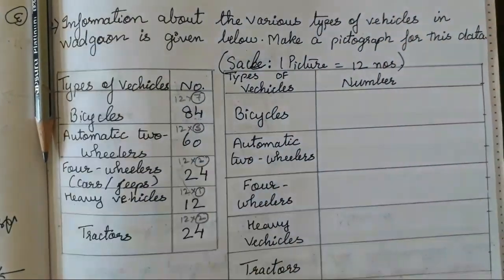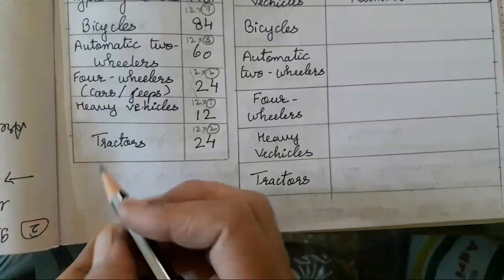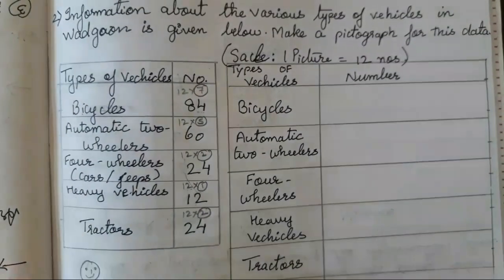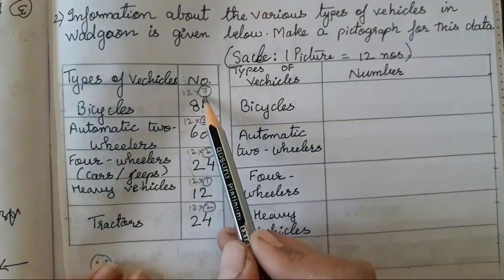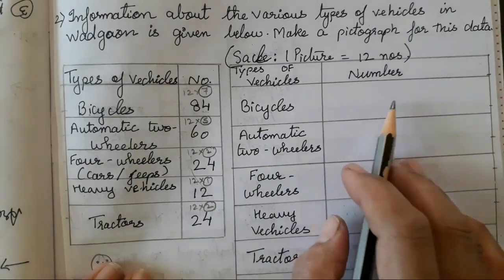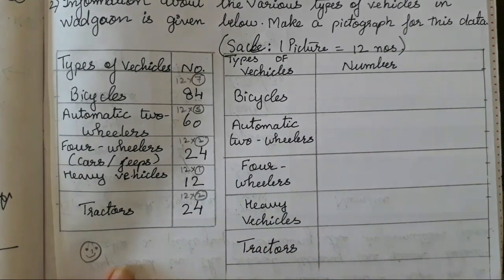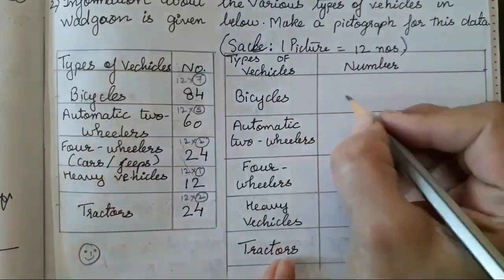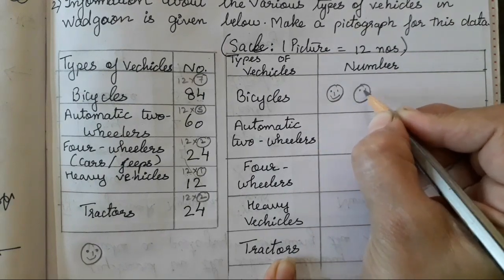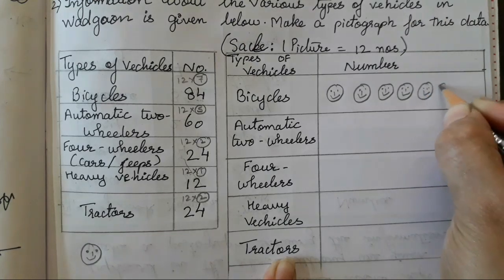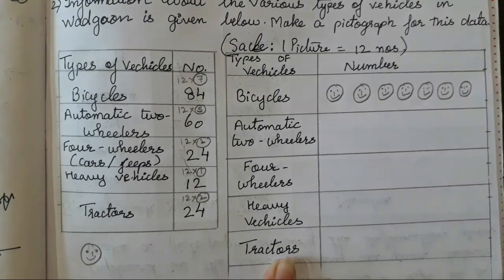I have written the spelling wrong. So this is the scale, and the picture I am going to draw is a smiley face — you all can draw any picture of your choice. For bicycle, how many pictures I have to draw? As I have done all my rough calculations, it will be easy for me to only draw. If you all are good at drawing, you all can draw a vehicle, but for all the vehicles the picture should be the same — it should not vary for bicycle, four-wheelers, automobiles. So how many smiley faces we have to draw? 7, because 12 sevens are 84: 1, 2, 3, 4, 5, 6, 7.